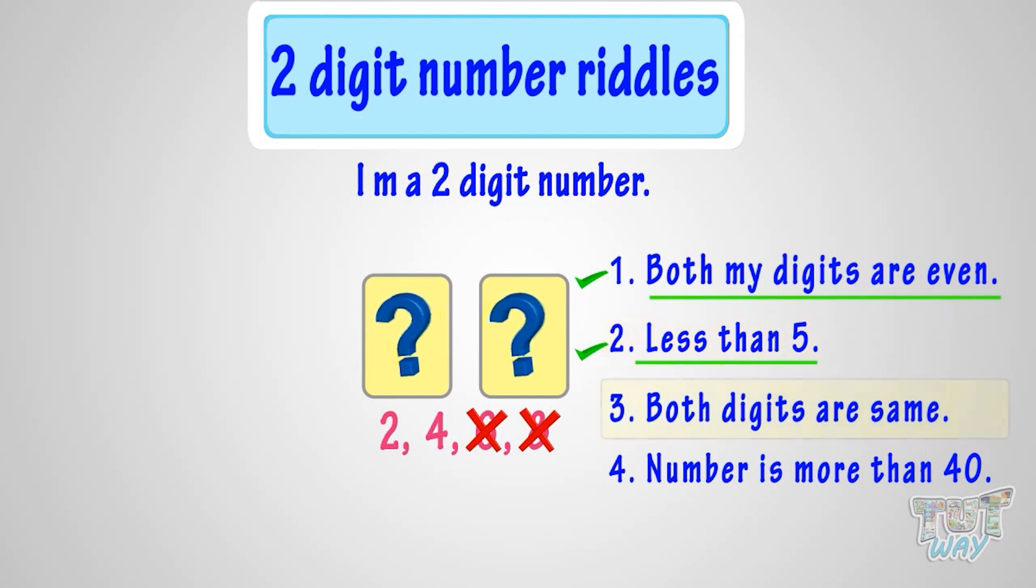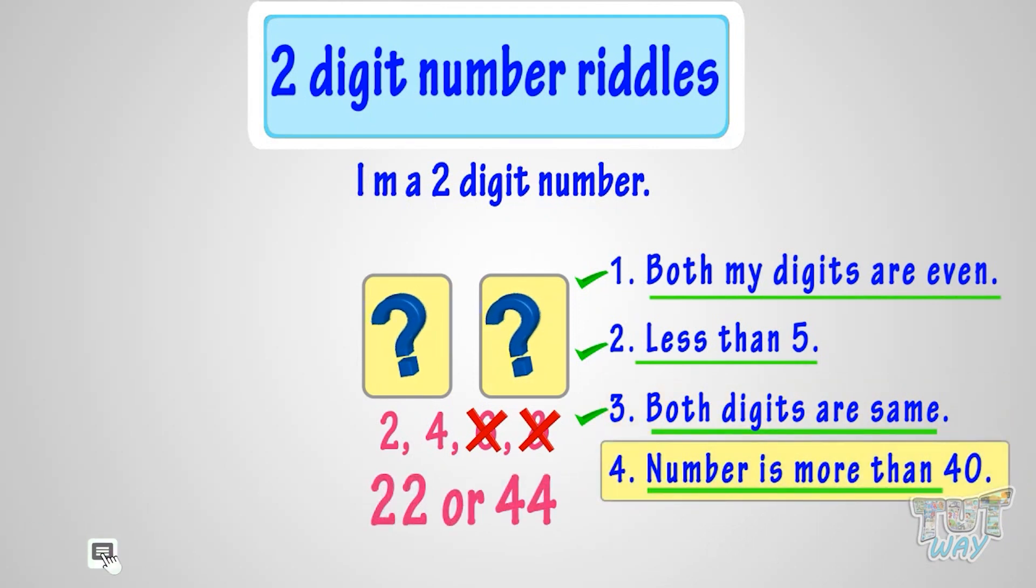Using the third clue, both digits are same. It means number can be 22 or 44. Using the last clue, number is more than 40. So we got it! It's 44!